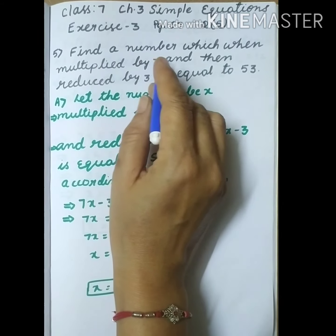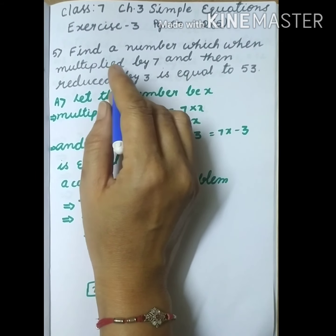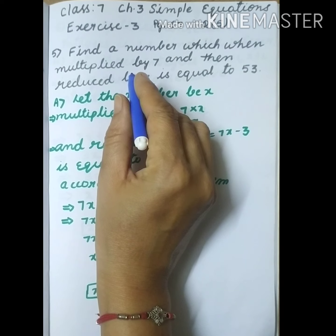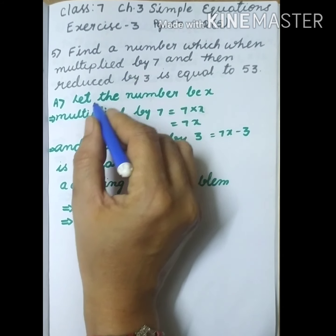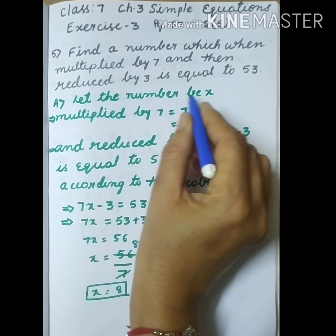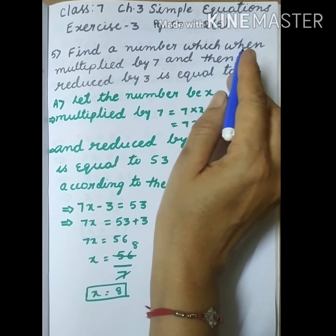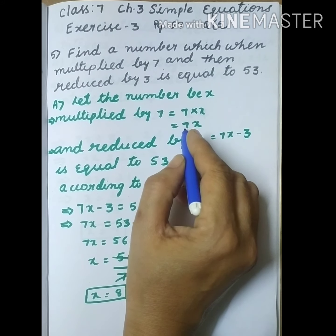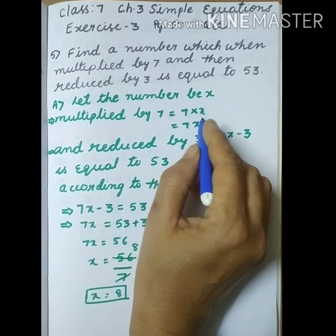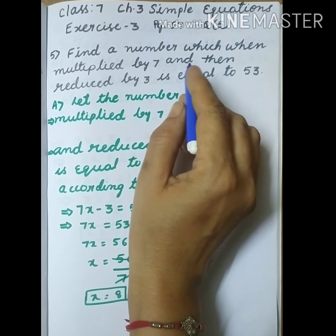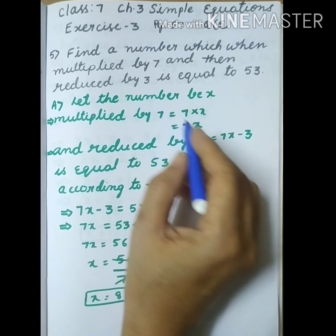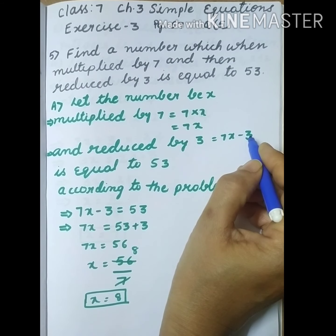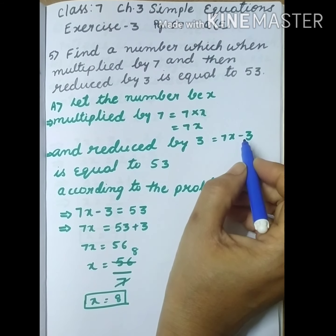We have to find the number. Since we don't know the number, let the number be x. Which when multiplied by 7 — this number we have to multiply by 7 — so we are getting 7 into x, that is 7x. And then reduced by 3, meaning we have to subtract: 7x minus 3.